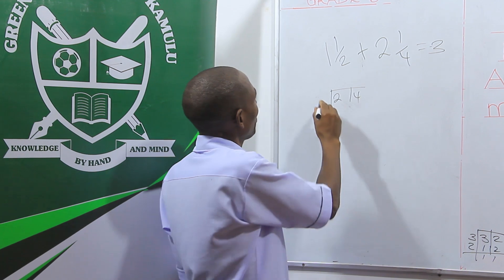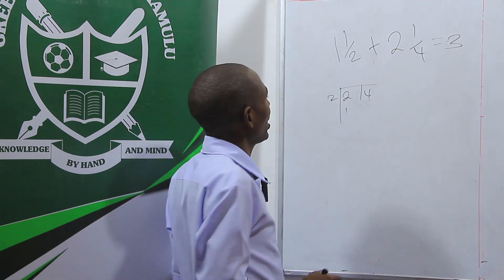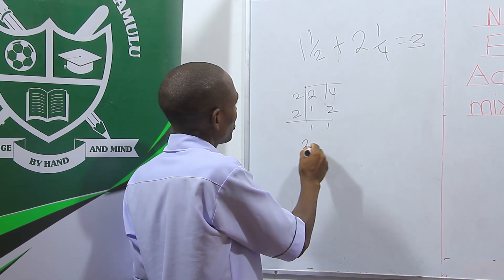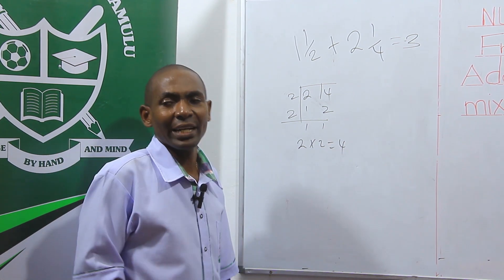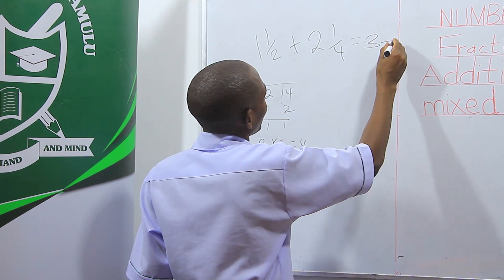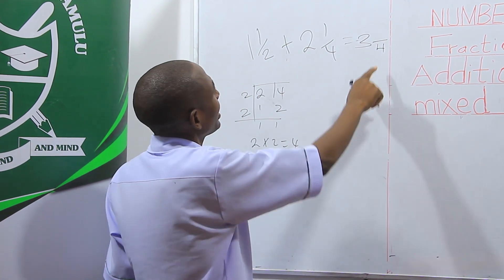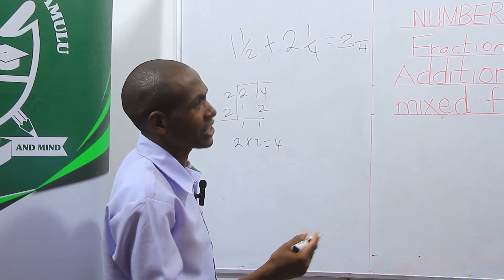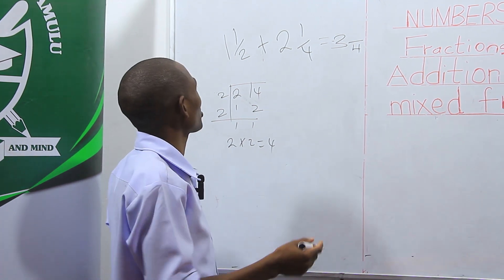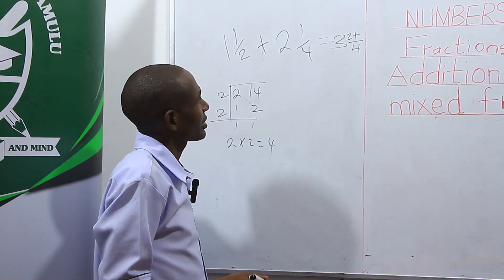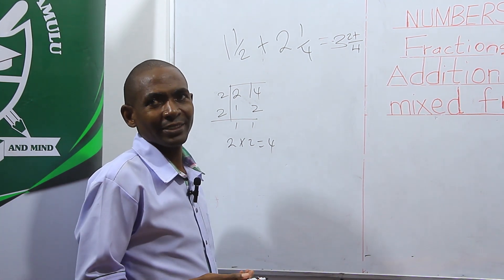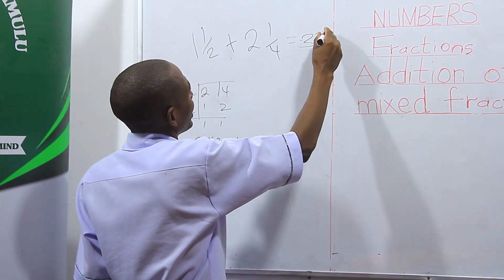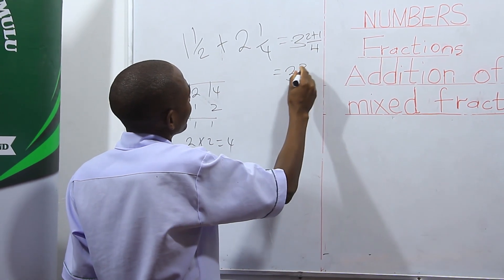We divide by two: two divided by two is one, four divided by two is two. Then divide by two again, getting one and one. So two times two is four — our LCM is four. Then four divided by two is two, times one is two. Plus four divided by four is one, times one is one. So we add to get three and three-quarters.